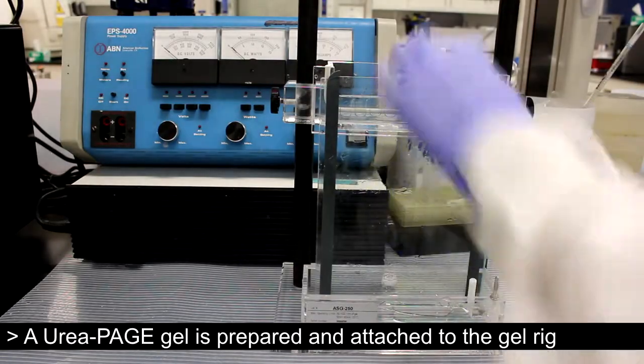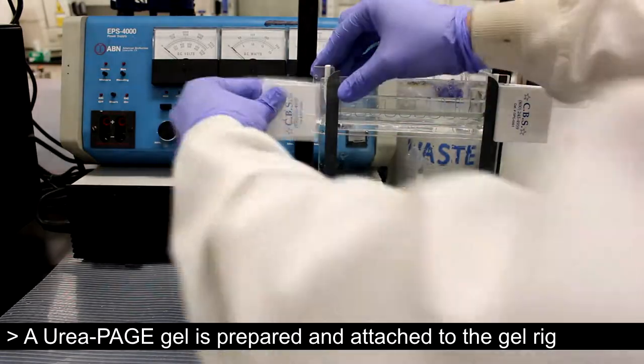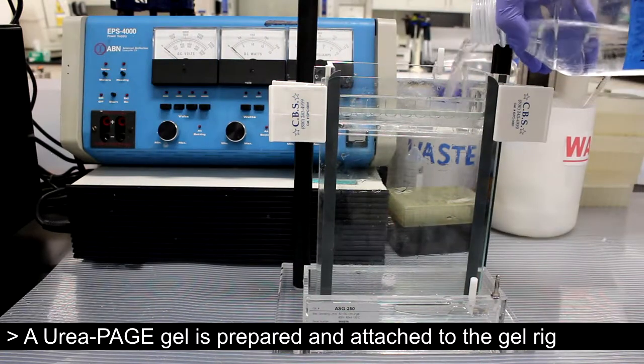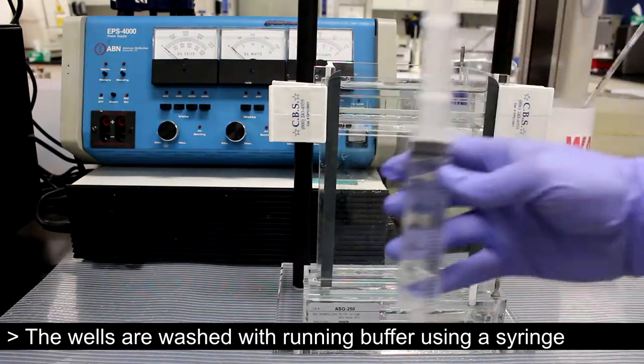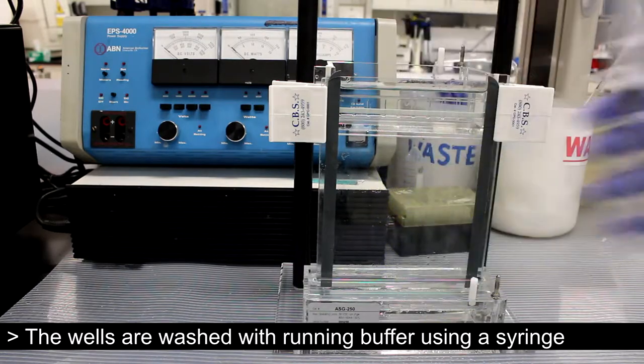To begin, a previously prepared urea gel is attached to the gel rig. The gel rig is filled with 1X TBE running buffer. The wells are washed with running buffer using a syringe.